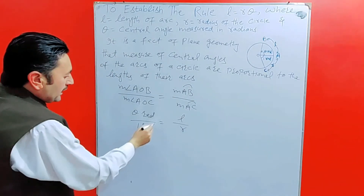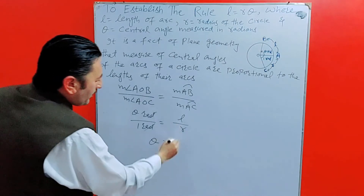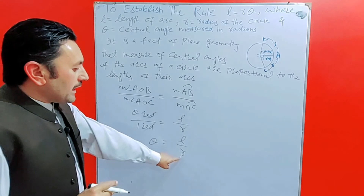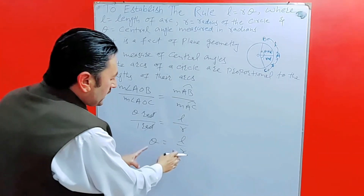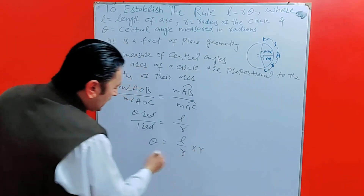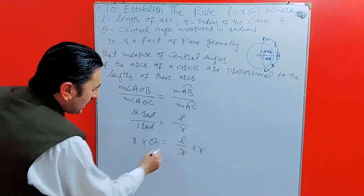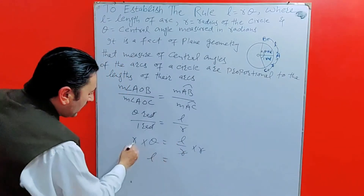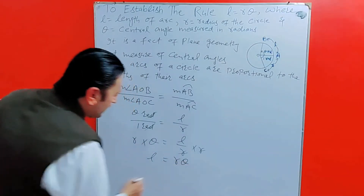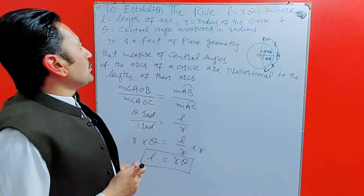تو اس میں radian رadian کے ساتھ cancel ہوتا ہے، theta divided by one سے theta آتا ہے، اور یہاں پہ ہمارے پاس ہے l by r۔ اس fraction کو ختم کرنے کے لیے equation کے دونوں sides کو r سے multiply کرنا ہوگا — multiplying both sides by r۔ r، r کے ساتھ cancel ہوگا، یہاں پہ l آتا ہے اور r اور theta کو multiply کرے تو l is equal to r theta. So l is equal to r theta is the required proof of this rule.